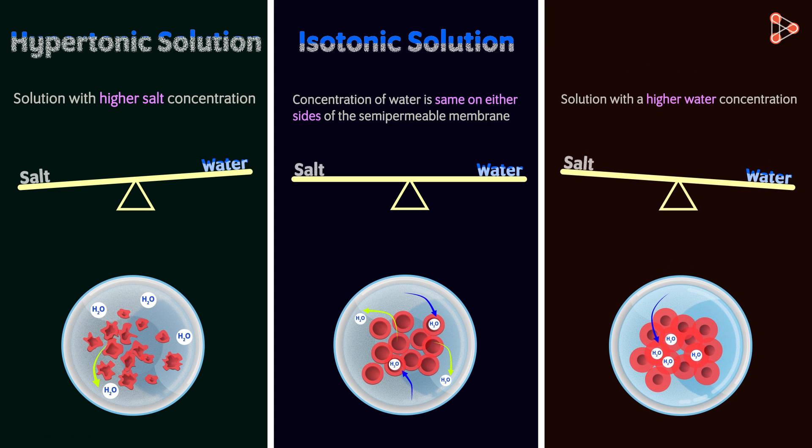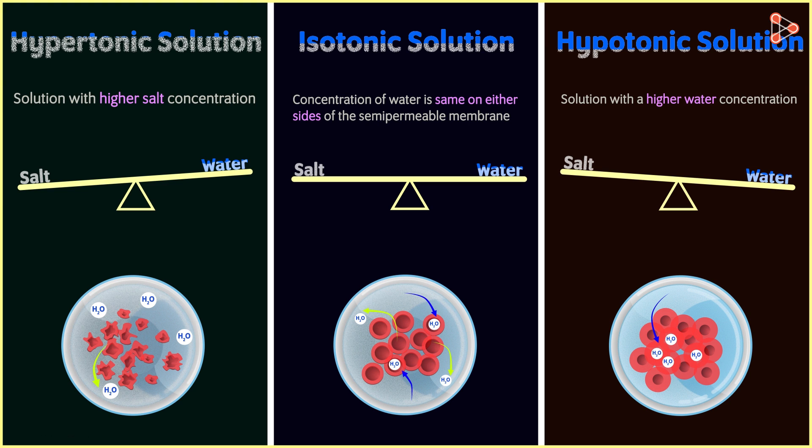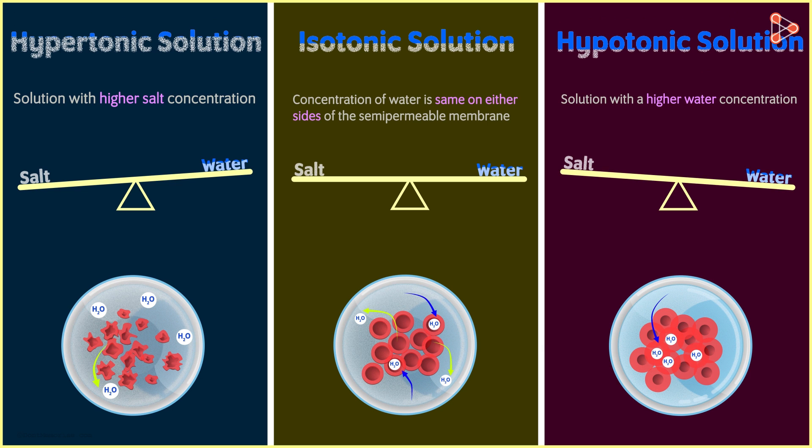Such a solution is called a hypertonic solution. In other words, solution with a higher water concentration compared to the other. This is how various solutions and their different concentrations help cells to sustain pressure and to survive.